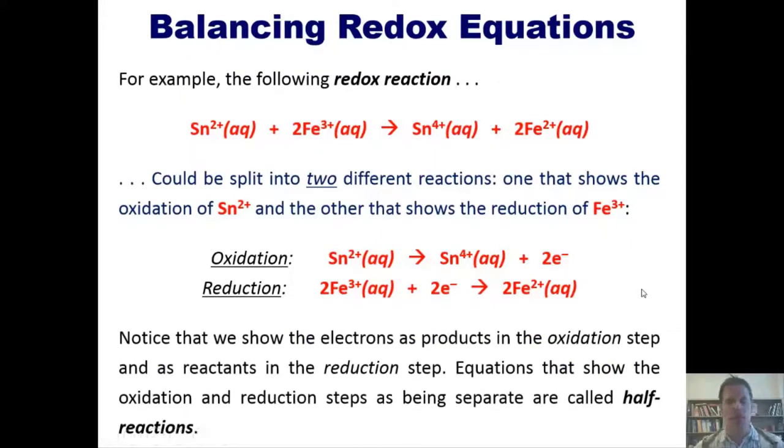Now please notice that we show electrons as products in the oxidation step and as reactants in the reduction step. Equations that show the oxidation and reduction steps as being separate are called half-reactions. I realize this might seem a little bit overwhelming, but please rest assured I'll show you a bunch of examples.